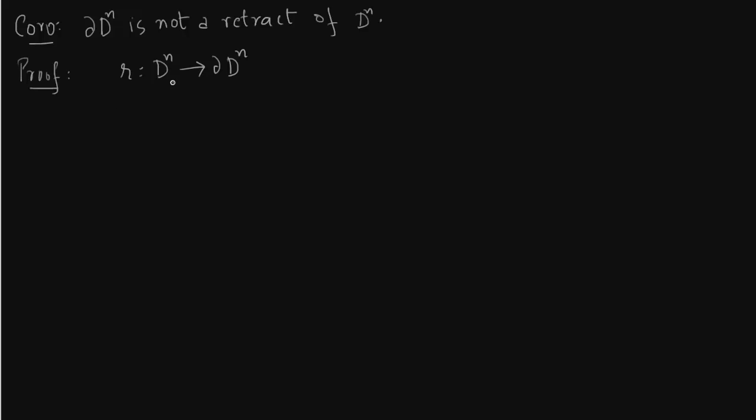The proof is by contradiction. So consider a retract like this. If there is a retract, you can consider an inclusion map also.